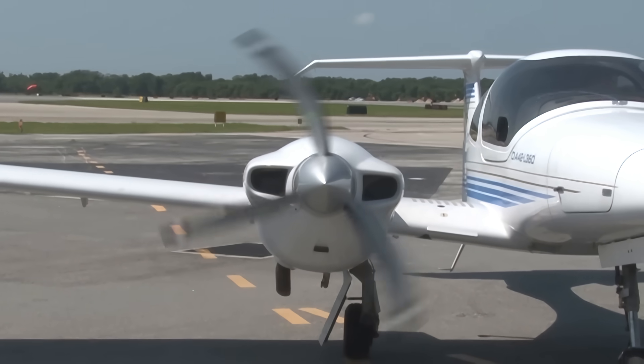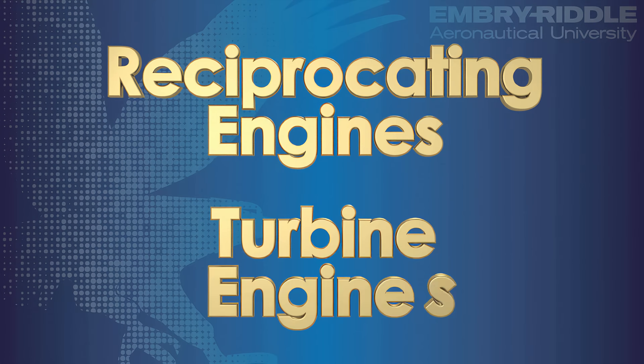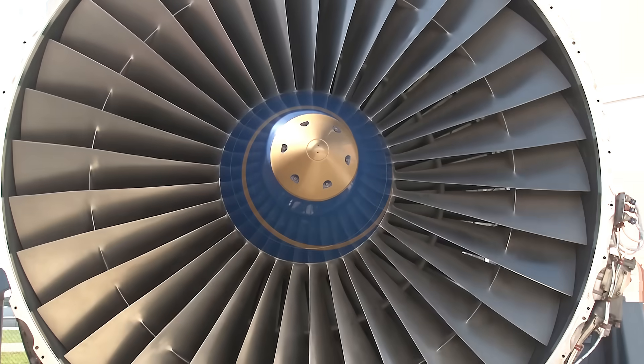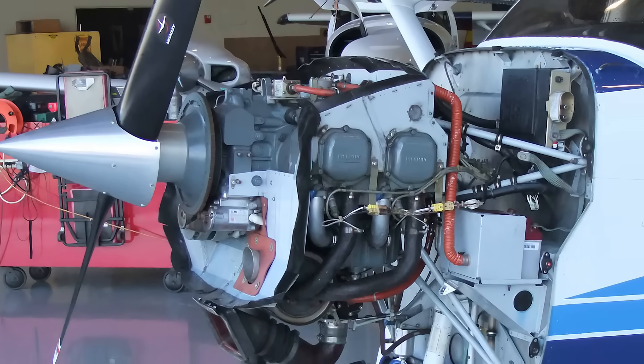Aviation engines can be separated into two groups, reciprocating engines and turbine engines. While most airlines and corporate airplanes use turbine-powered airplanes, general aviation and training aircraft are equipped with reciprocating engines.